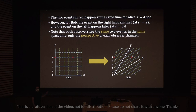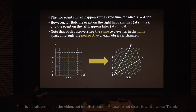This is a space-time diagram, so you shouldn't view it as two-dimensional space with things at different places. Space is just the horizontal axis — or in Bob's case, the diagonal axis. As we go vertically in the diagram, we move to different times.